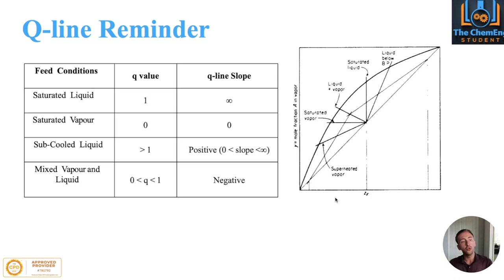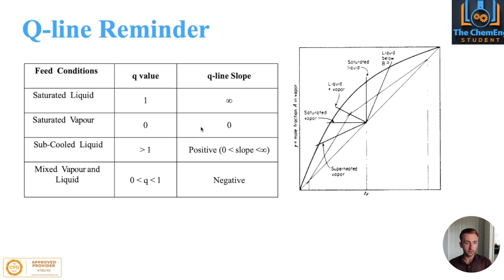A quick reminder of what the Q-line represents: the Q-line is dependent on the state of the feed — the state of the mixture entering the distillation column. If you have saturated liquid, your Q-line is a perfect vertical straight line with a Q value of 1 and slope of infinity. Saturated vapor is the complete opposite: a horizontal line with Q value of 0 and slope of 0. For a mixed vapor-liquid or sub-cooled liquid system, the Q-line falls between those two values.